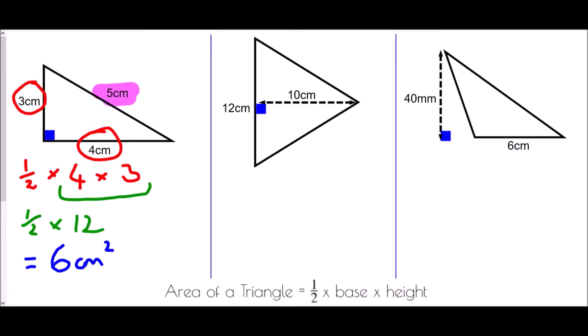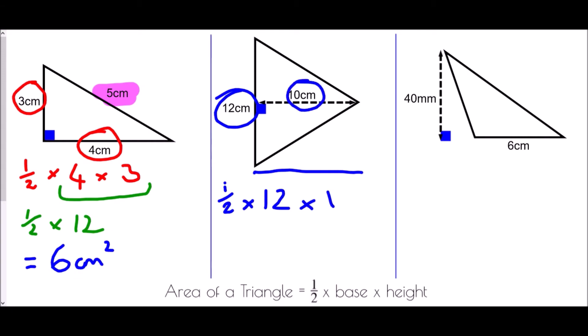The second question looks different but still has a right angle. The problem is identifying the base — we're used to seeing it along the bottom, but that's not always the case. This shape has been turned on its side, so the base is the 12 centimetres and the height is the 10. 12 times 10 is 120, and half of that gives us 60 centimetres squared.